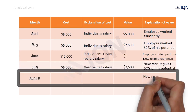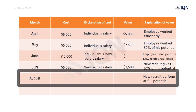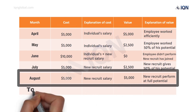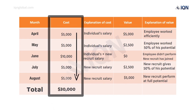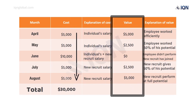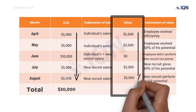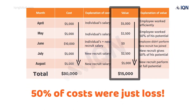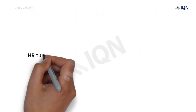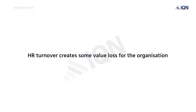Finally, in August, the new recruit starts to perform at his full potential, so both cost and value to the organization is $5,000. Adding up all figures in the cost column, over the period of five months, the organization incurs a total cost of $30,000. Adding up the value column, the contribution to the organization was only $15,000. This means 50% of costs were just loss. With this simple analytics example, we can understand that HR turnover creates significant value loss for the organization.